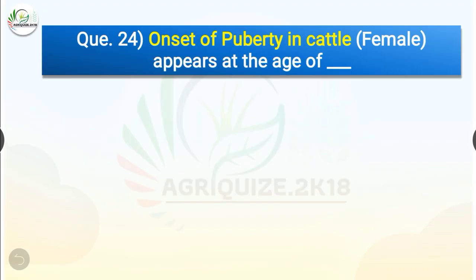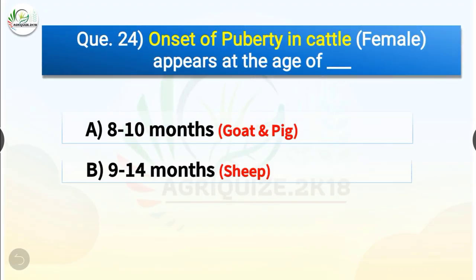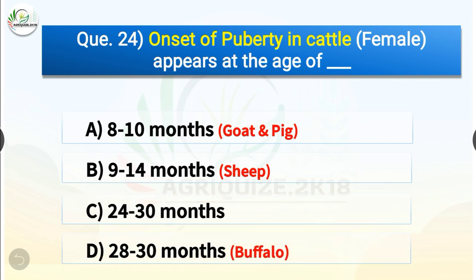Question number 24. Onset of puberty in cattle (female) appears at the age of dash. The options are 8 to 10 months, 9 to 14 months, 24 to 30 months or 28 to 30 months. The correct answer is option C, 24 to 30 months. So onset of puberty in cattle appears at 24 to 30 months. In goat and pig it is 8 to 10 months, in sheep it is 9 to 14 months, and in buffalo it is 28 to 30 months.